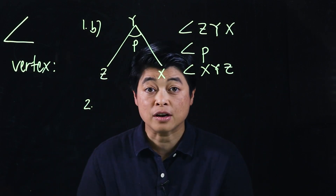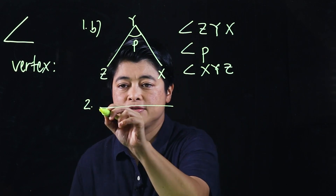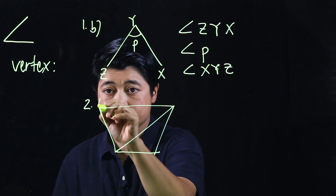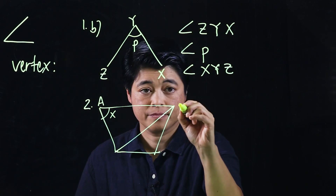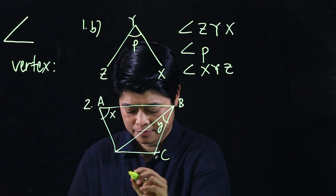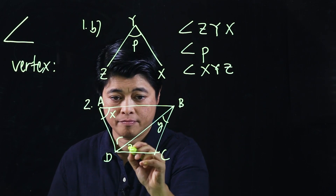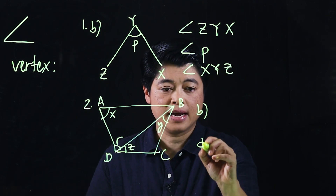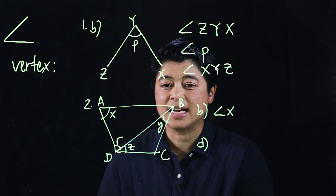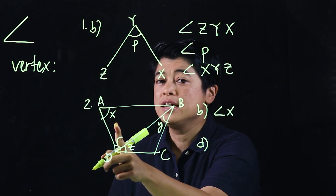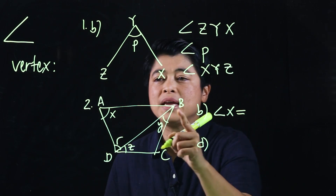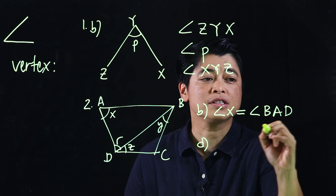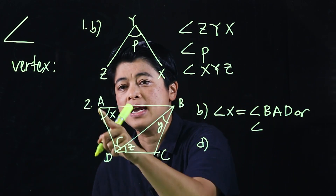Another problem on naming angles would be this figure. For letter B, it says 'name angle X differently.' One way would be angle BAD, and it can also be named angle DAB.